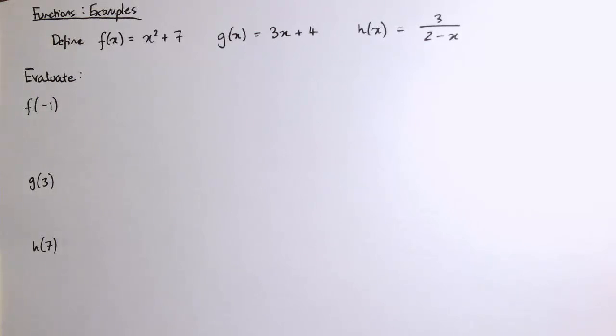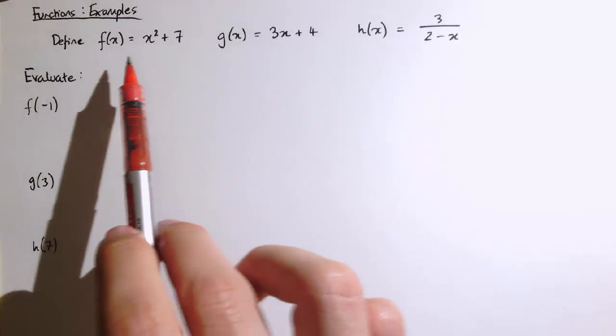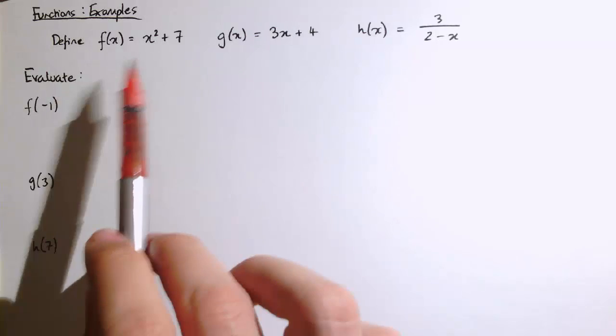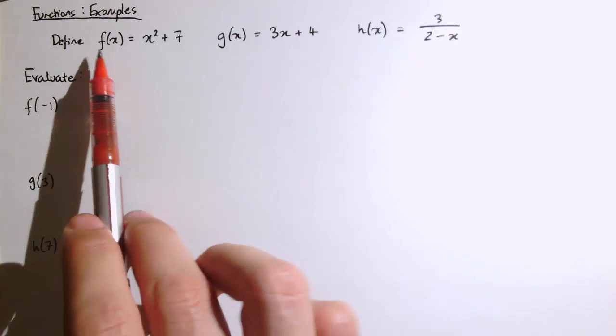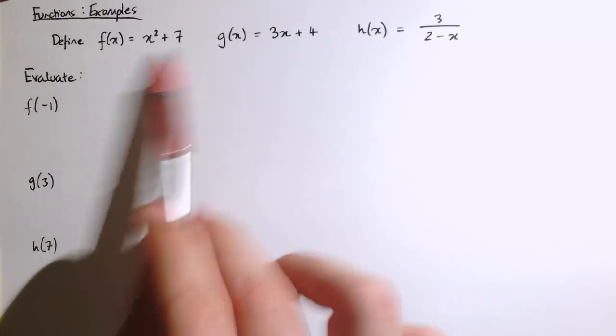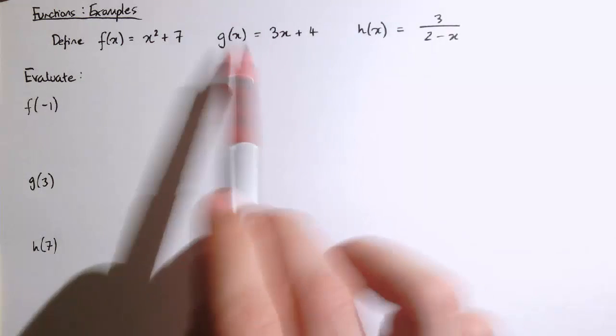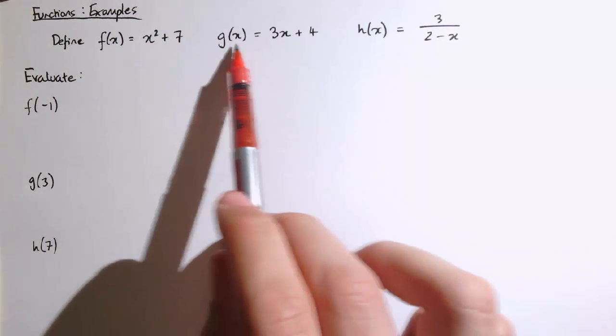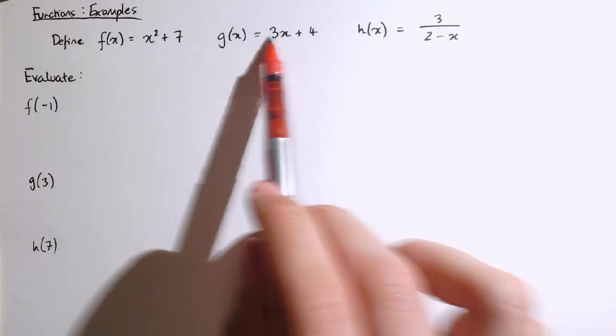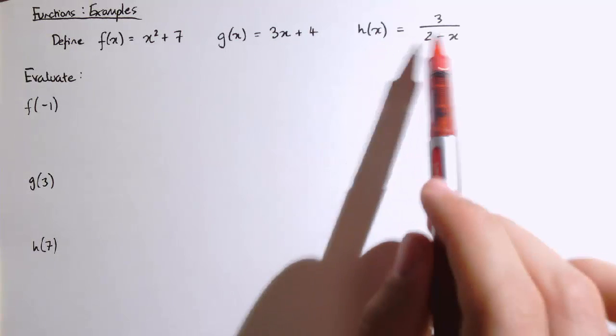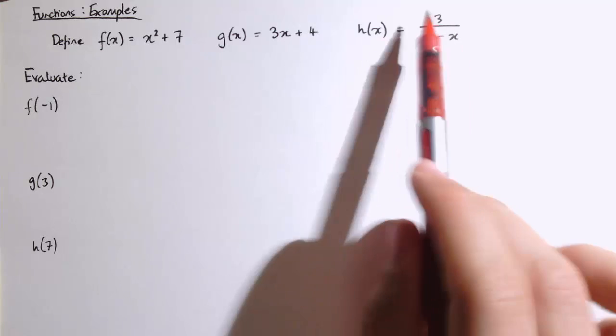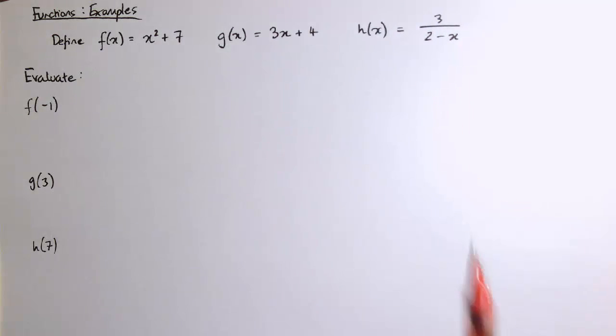Okay, so I'm just going to do a few examples of simple functions. I've defined three functions at the top here. f is a machine that takes input x and gives out x squared plus 7. g is defined as taking the input x and multiplying it by 3 and adding 4. And h is defined by this function where we put in x here and we do 3 divided by 2 minus x.